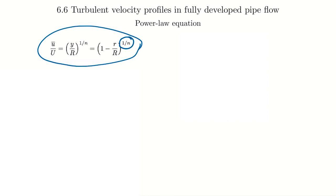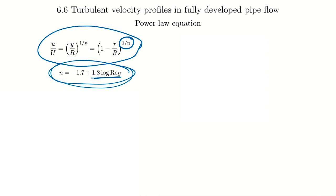It works really well. One small drawback is it's not very accurate really close to the wall, but we can calculate wall shear stress with the earlier expression, so that's not a big deal. For most of the flow away from the wall, it's a great approximation. Experimental studies found you can approximate and calculate the n value based on Reynolds number using that expression, giving a relationship showing that as Reynolds number increases, the value of n increases as well.